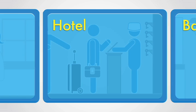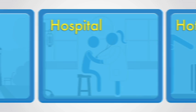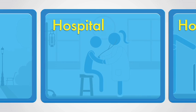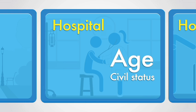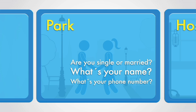At the hotel, it's giving your full name, your nationality, preferences — that's very important information. At the hospital, your age, your civil status, your occupation. When meeting someone for the first time, the questions are: Are you single or married? What's your name? What's your phone number?